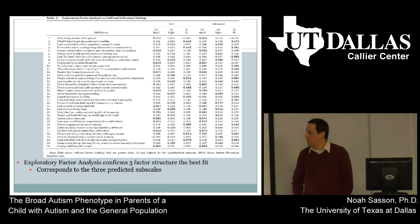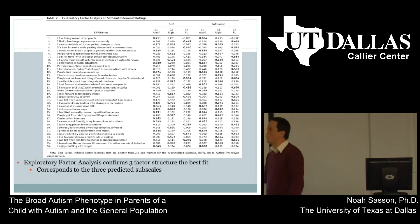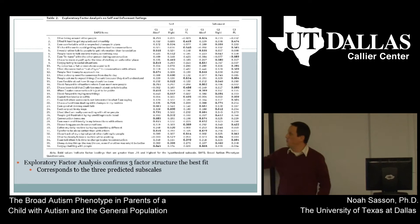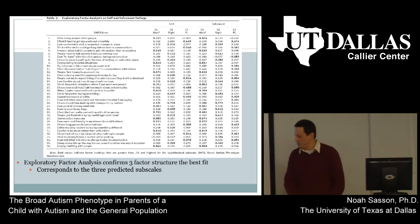We did an exploratory factor analysis on the 36 items, confirming that a three-factor structure is best and that they correspond to our predicted subscales. For aloofness, example items include 'I like being around other people' or 'I would rather talk to people to get information than to socialize.' For rigidity: 'I am comfortable with unexpected changes in my plan' or 'People have to talk me into trying something new.' For pragmatic language: 'I find it hard to get my words out smoothly' or 'It's hard for me to avoid getting sidetracked in conversations.' We have psychometric validation for both the self-report and informant report versions, with a lot of reliability between items on each subscale.